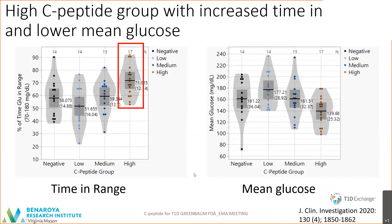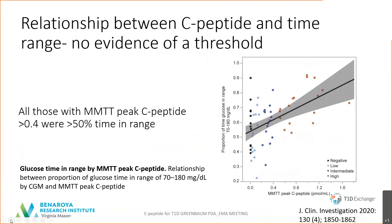From the CGM data across people from low to high levels of C-peptide, the mean glucose is lower in those with more residual insulin secretion. It's particularly evident when you look at the percentage of time in range — among people with the highest levels of C-peptide, there was clearly an increased time in range. However, even though all of those in the highest peak C-peptide group were greater than 50% time in range, when you plot the individual data, though there's a strong relationship, there is no clear threshold as to what level of C-peptide would best assure appropriate time in range.